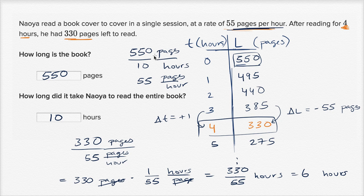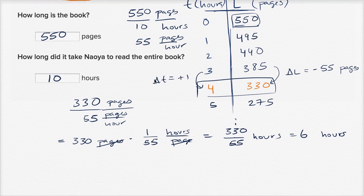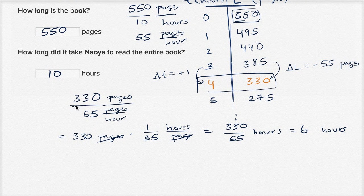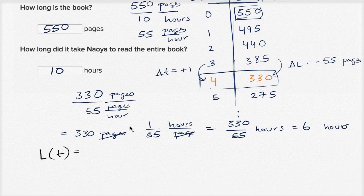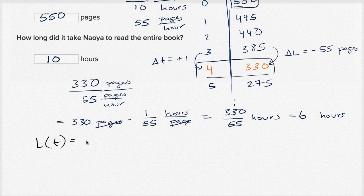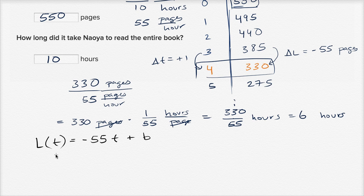Another way to tackle this: since he's reading at a constant rate, this is a linear equation. We can write 'left to read as a function of time' as L(t) = -55t + b, where the negative 55 represents that the pages left to read go down by 55 every hour, and b is the initial number of pages.